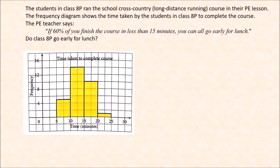Next example: the students in Class 8B ran the school cross-country course in their PE lesson. The frequency diagram shows the time taken by students to complete the course. The PE teacher says: if 60% of you can finish the course in less than 15 minutes, you can all go early for lunch. Can they go early for lunch? We want the times that are less than 15 minutes — on the x-axis, 15 minutes is here, so we look at everything to the left.